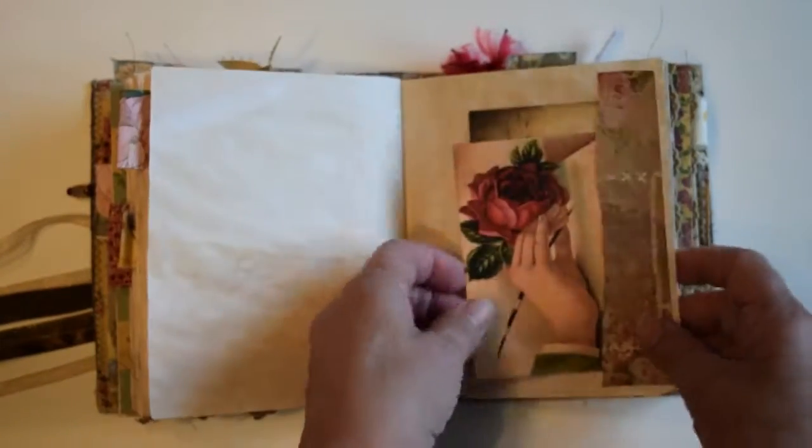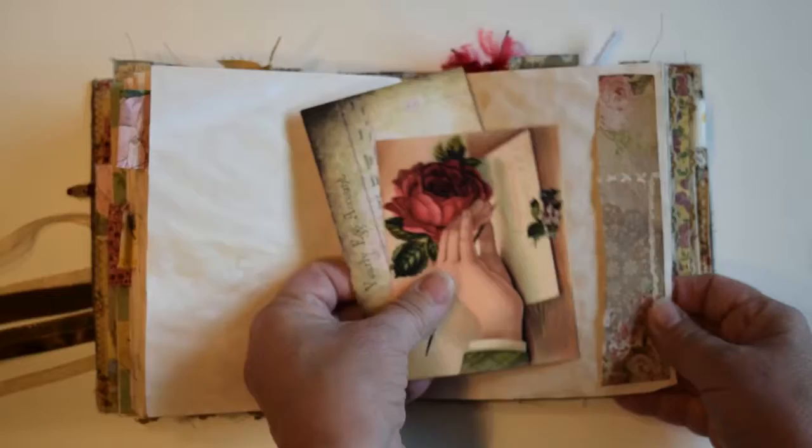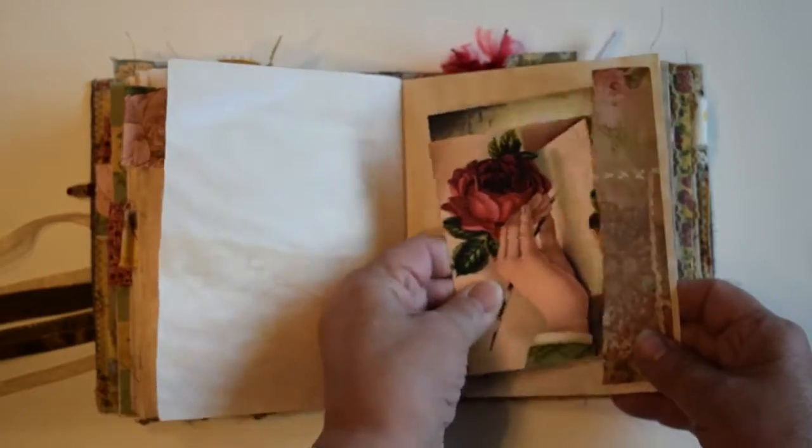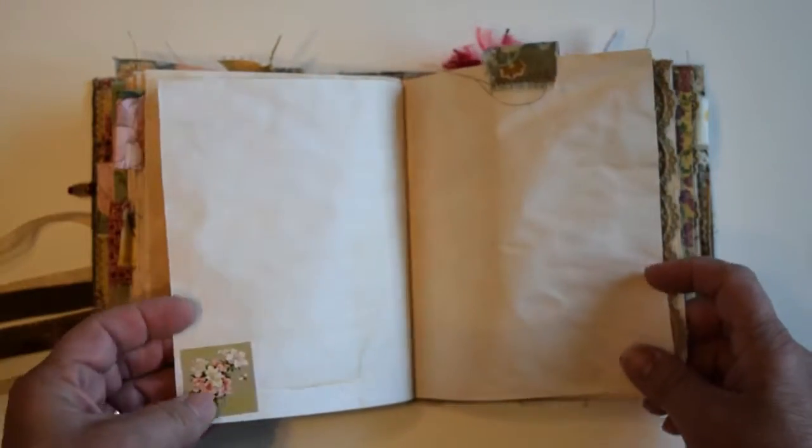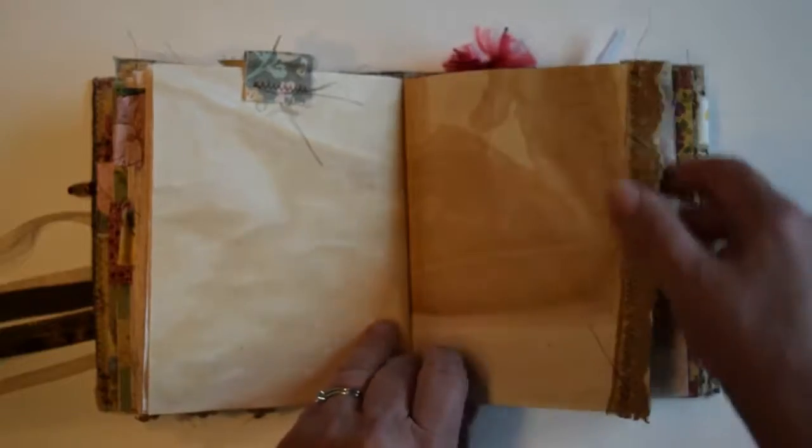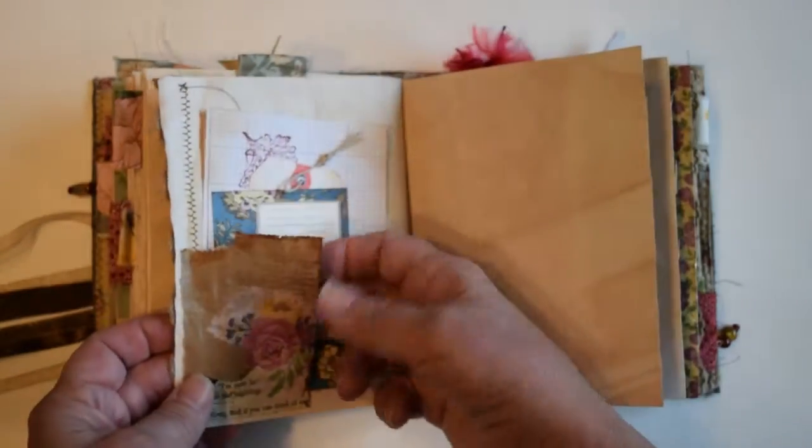Patterned paper, there's a little tuck spot with some ephemera, some ledger paper. There's a little image glued on the corner there. There's more lace sewn on the edge of that.